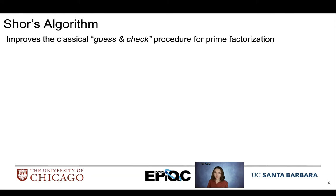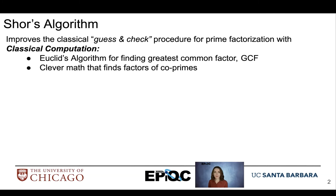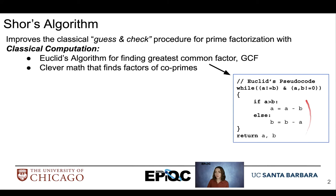Shor's algorithm includes classical and quantum components. So for classical computation, we use Euclid's algorithm for finding the greatest common factor or GCF, as well as clever math that helps us find factors of coprimes. Here we have the Euclid's algorithm pseudocode where we take two numbers, A and B, and we attempt to find the greatest common factor between them.